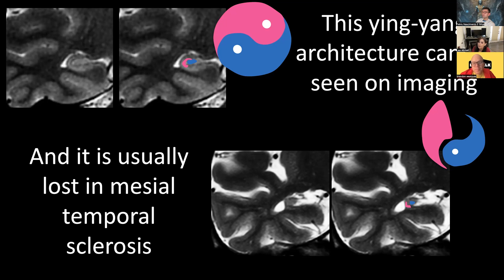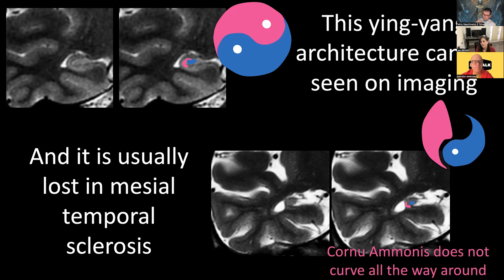When radiologists say in the report that there's loss of internal architecture — that's exactly what we're referring to. It is only later that loss of these neurons causes overall volume loss due to decreased connectivity, and eventually you start to get gliosis and T2 signal. So along the spectrum of mesial temporal sclerosis, this loss of internal architecture is the first finding, and it is absolutely enough to call MTS in your report.